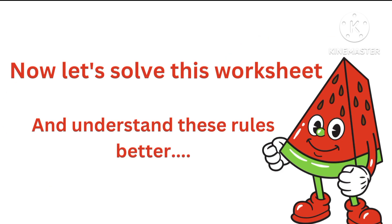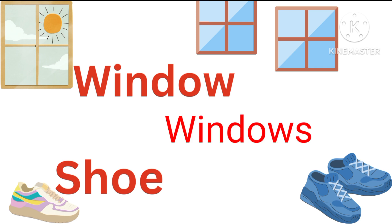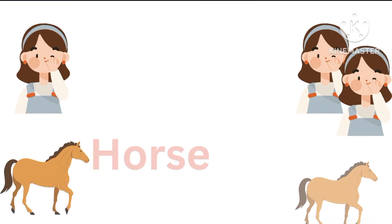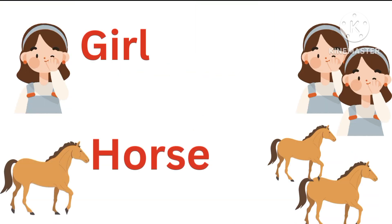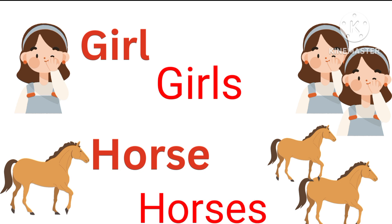Now let's solve this worksheet and understand these rules better. We have to change the singular noun to plural form. Window becomes windows. Shoe becomes shoes. Girl becomes girls. And horse becomes horses.